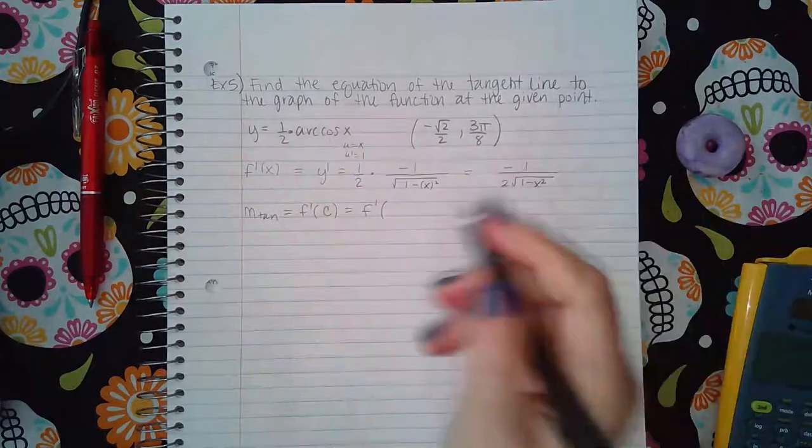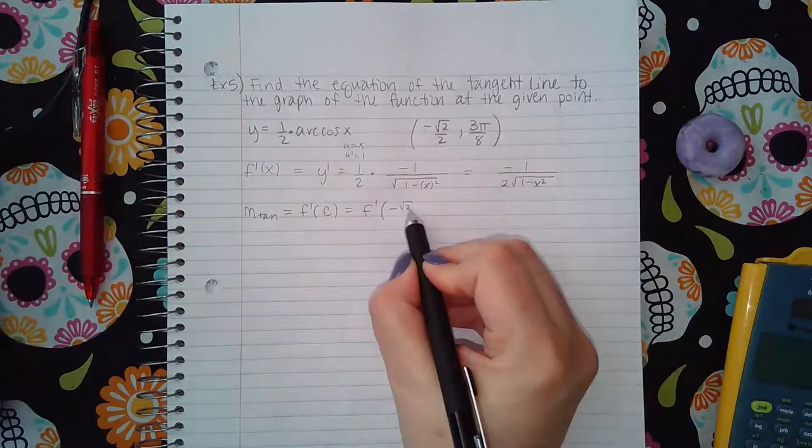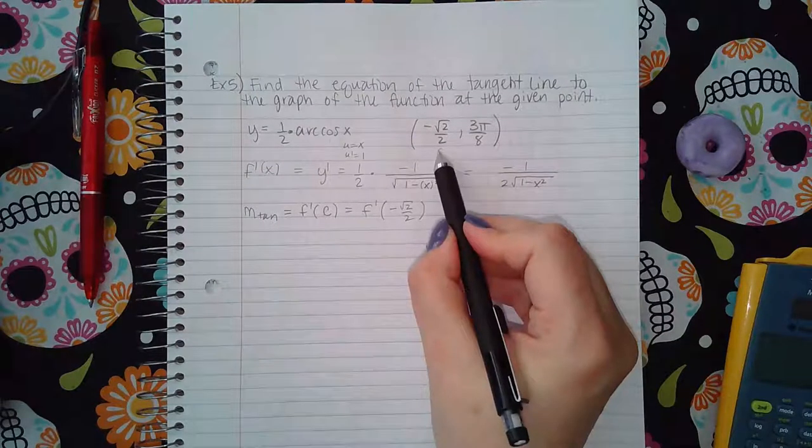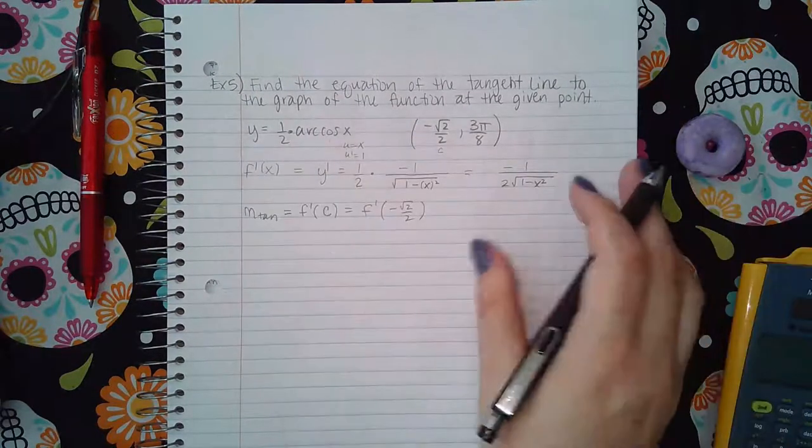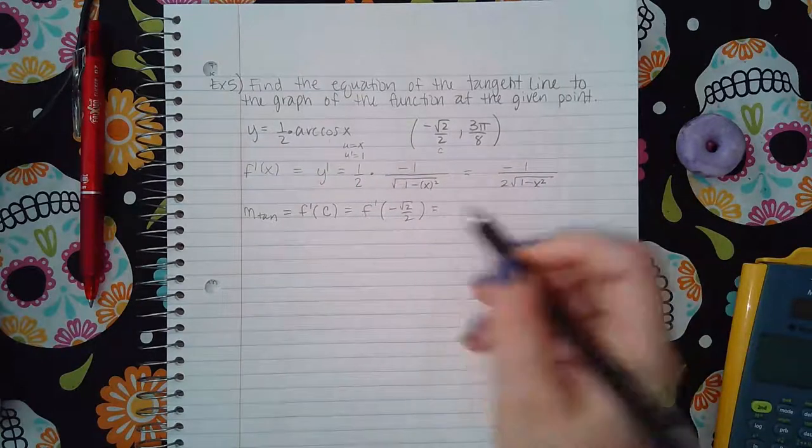I think they use the letter c in the book. So it'd be negative square root of two over two, because that's the x value that they gave me in the point.